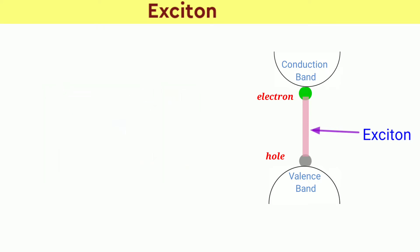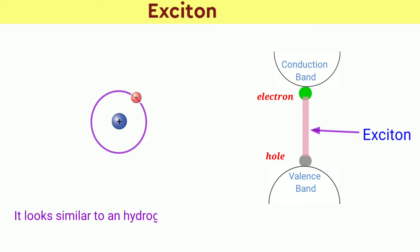This is very similar to a hydrogen atom where an electron orbits around a proton. However, it has a lower binding energy because of the small effective masses of the excited electron and hole.